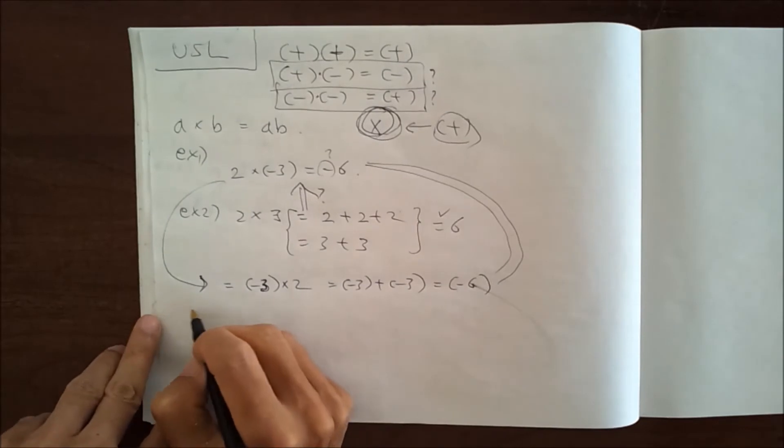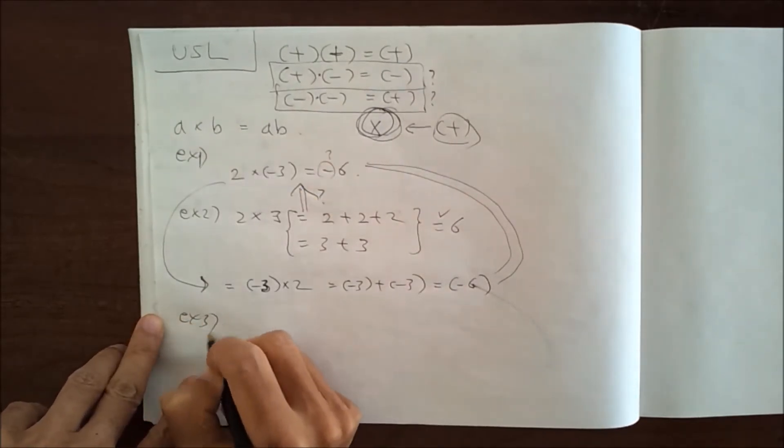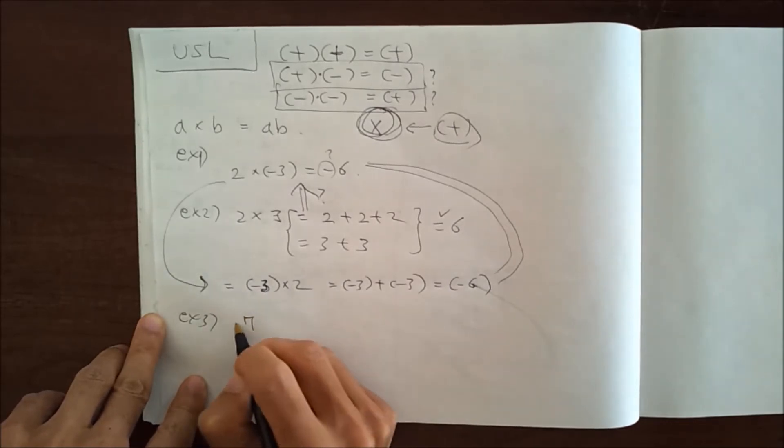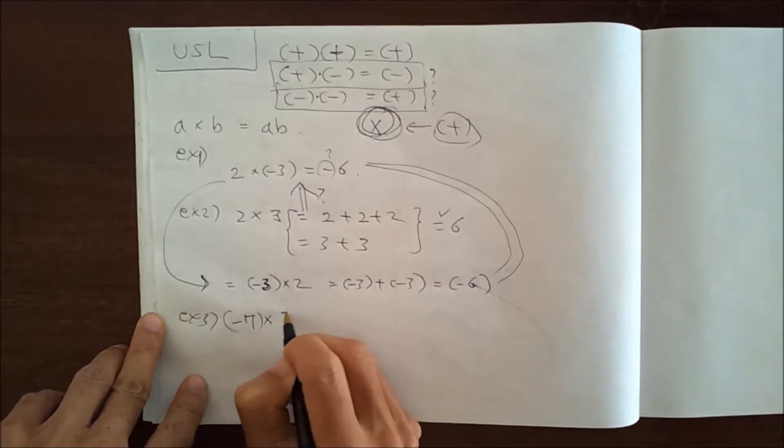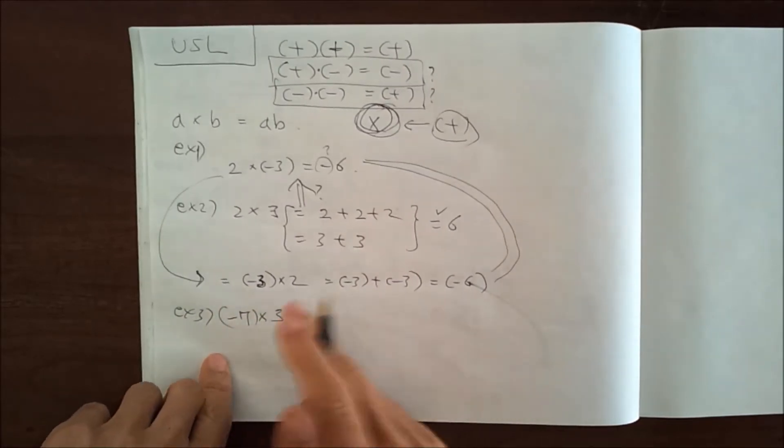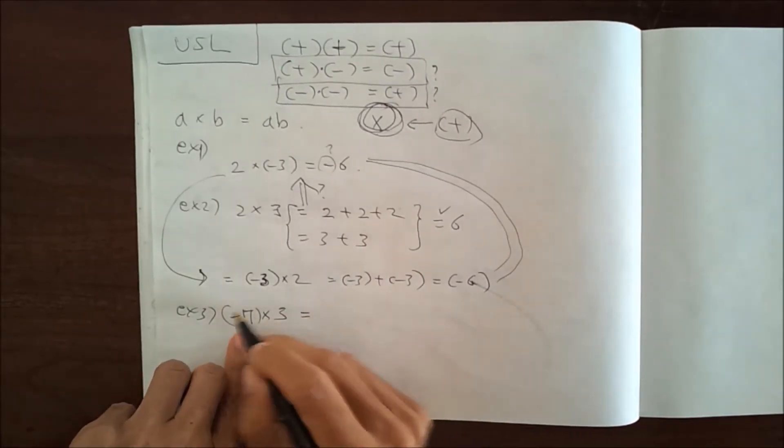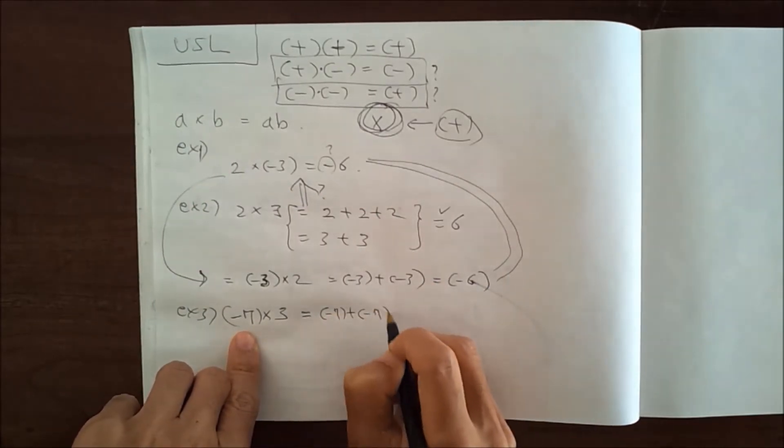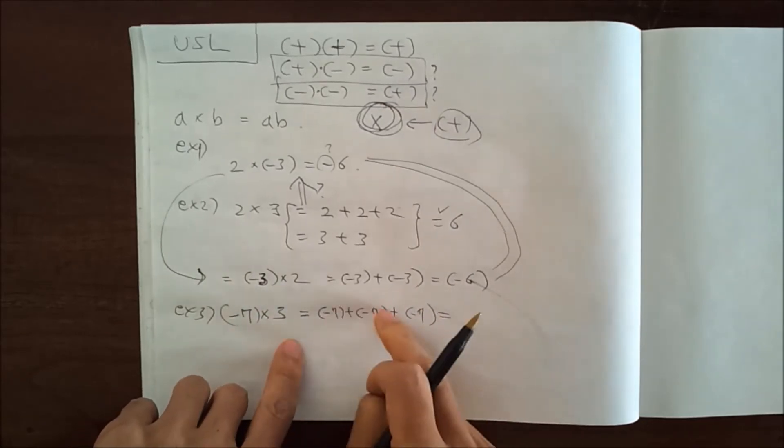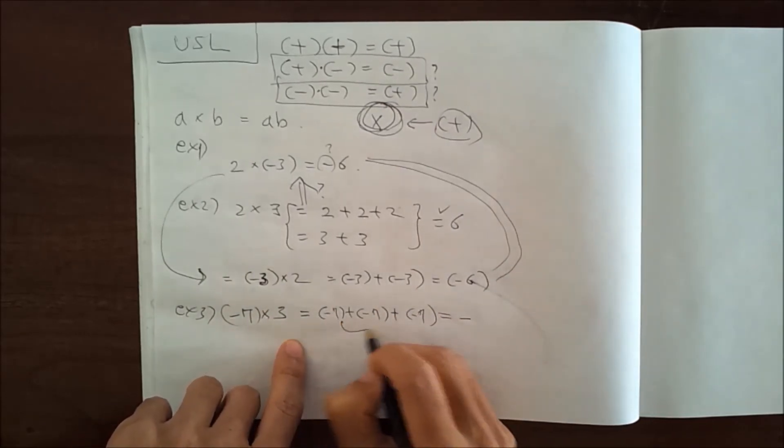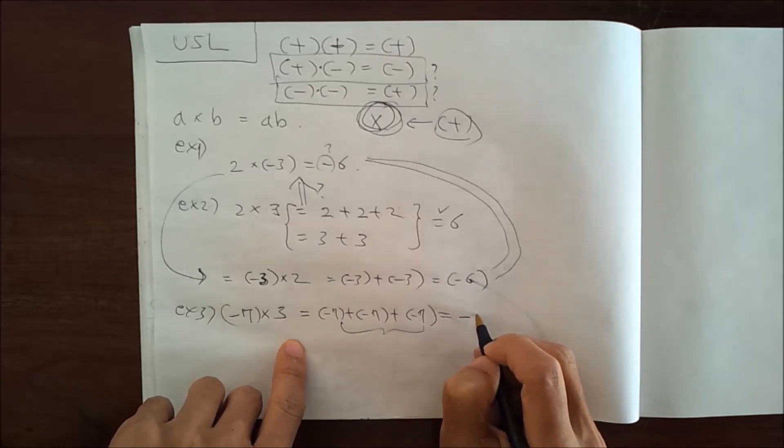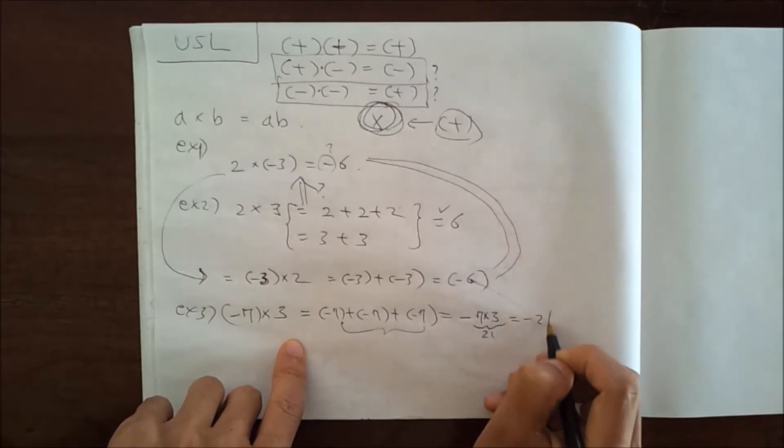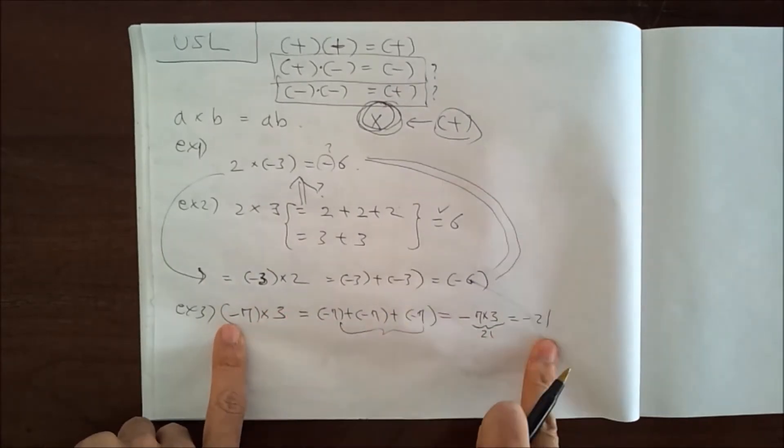Let's do one more example. Example 3: let's say something bigger, minus 7 multiplied by 3. This one is nothing more than minus 7 plus minus 7 plus minus 7. Minus 7, 3 times. So 3 times 7 is 21, so it will be minus 21. Again, it's going to get minus 21.